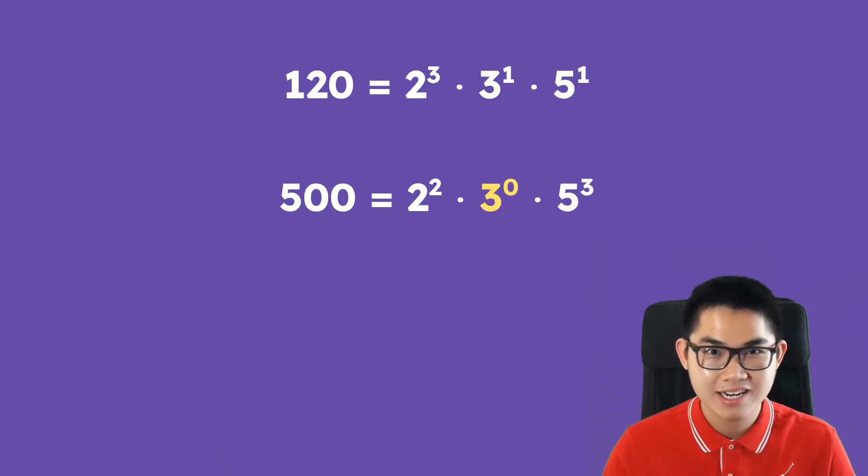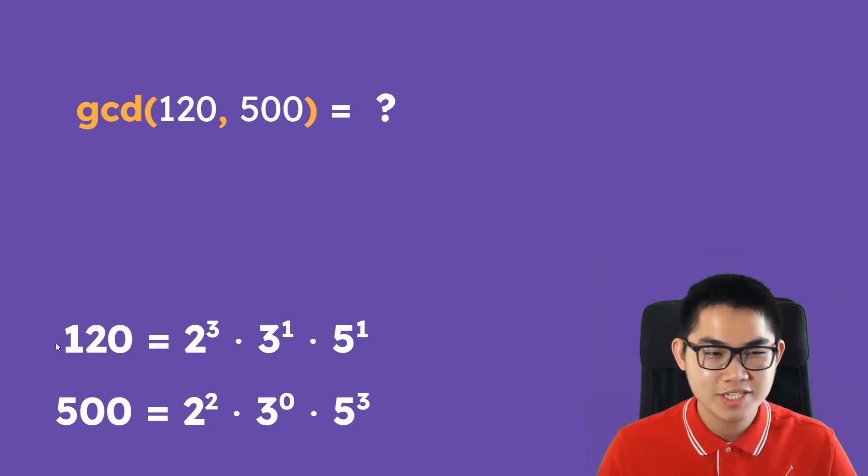This doesn't change anything because that's the same as multiplying by 1. 3 to the power of 0 is 1. So I'm going to put the results at the bottom so it's easier to look at and we're now ready to calculate the GCD.